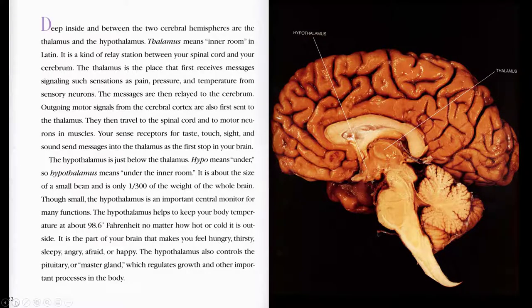Deep inside and between the two cerebral hemispheres are the thalamus and the hypothalamus. Thalamus means inner room in Latin. It's a kind of relay station between your spinal cord and your cerebrum. The thalamus is the place that first receives messages signaling such sensations as pain, pressure, and temperature from sensory neurons. The messages are then relayed to the cerebrum. Outgoing motor signals from the cerebral cortex are also first sent to the thalamus. They then travel to the spinal cord and to motor neurons and muscles. Your sense receptors for taste, touch, sight, and sound send messages into the thalamus as the first stop in your brain.